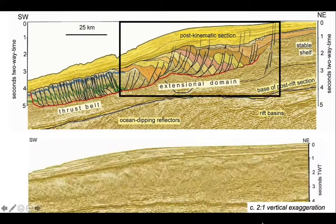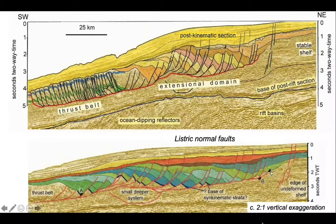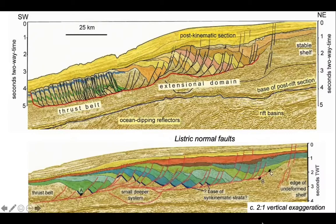Let's look at some of the structures, starting in the extensional domain. Zooming in on that, with a two-to-one vertical exaggeration, we can see the stratigraphic packages in the small half-grabens that form above listric normal faults — faults that are steeply dipping near surface and then curve over to become gently dipping as they tie into the basal detachment. The various colours represent different stratigraphic packages deposited as the whole system slipped slowly off towards the floor of the Atlantic.